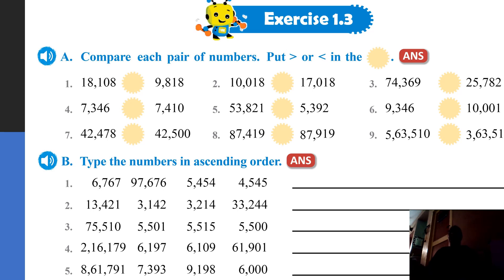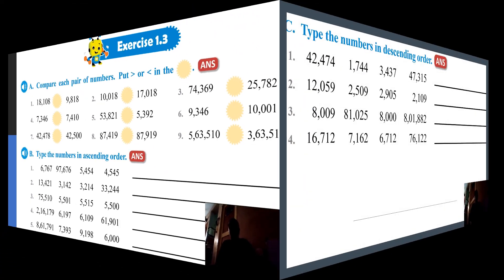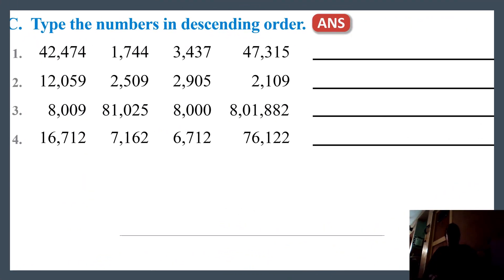Now, some questions in Exercise 1.3. There are three questions. Read the questions and write the answers in your notebook. You can check your answers from the answer book. The first question is: compare each pair of numbers and put a greater than or less than symbol. The second question is: write the numbers in ascending order. The third question is: write the numbers in descending order. Ascending order is increasing order, and descending order is decreasing order.